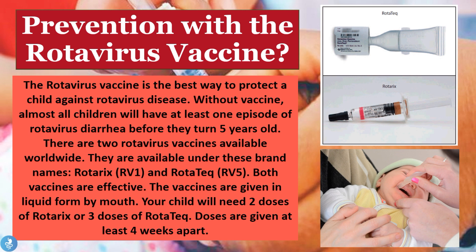The child will need two doses of Rotarix or three doses of RotaTeq, with doses given at least four weeks apart. The vaccine is usually given to infants starting at two months of age. Because the disease is responsible for causing severe dehydration especially in children under five, it's always better to be safe rather than sorry — vaccination is definitely highly recommended.